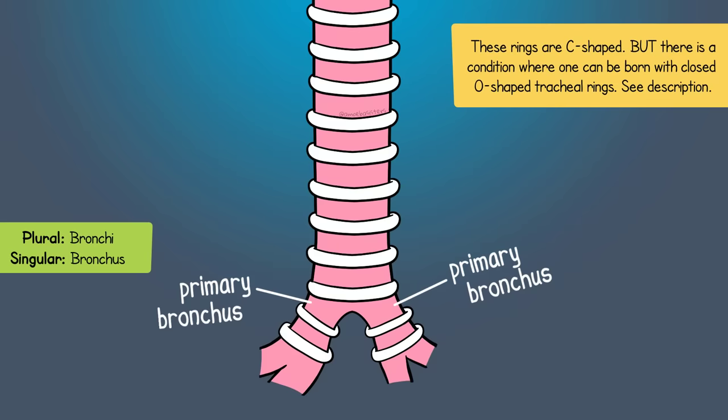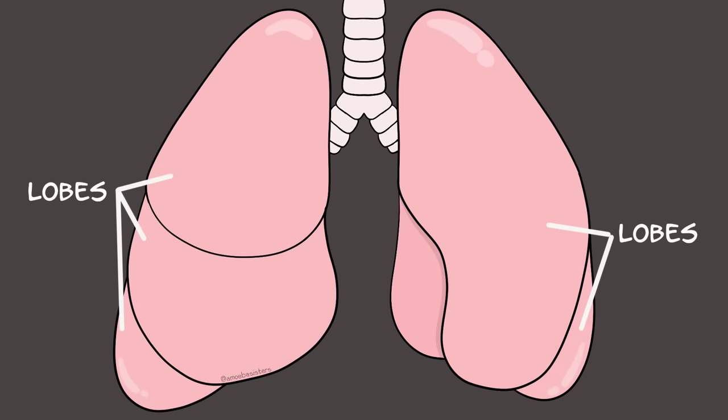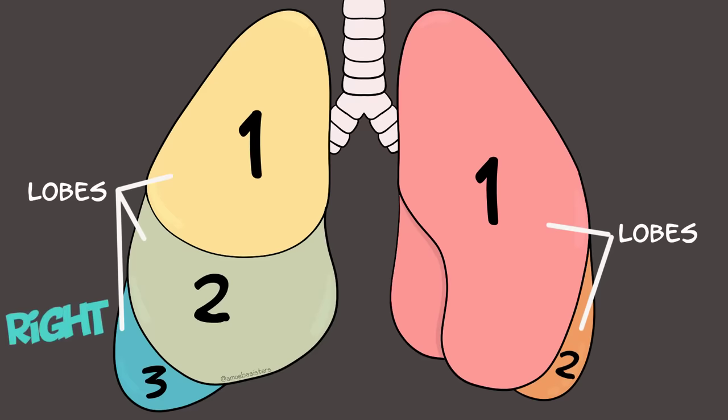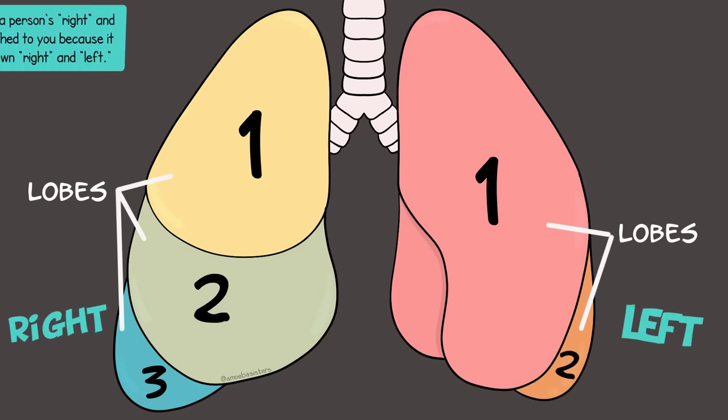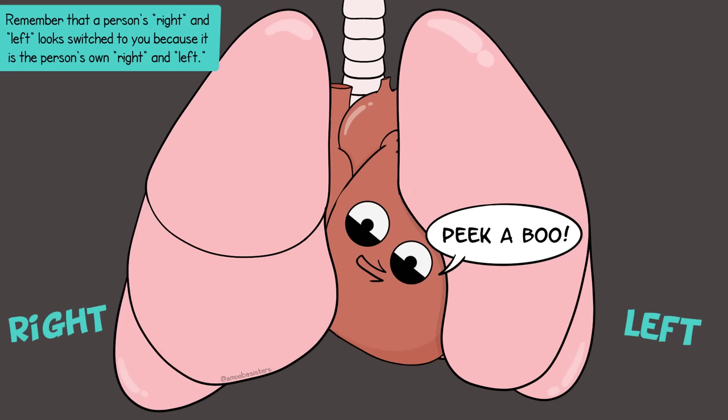The primary bronchi have one on each side as they branch to the lungs. There are two lungs — each has sections called lobes: three lobes on the right and two on the left. There's a cardiac notch on the left lung side, a little indentation to give the heart some room, which is why the left lung is generally smaller than the right.